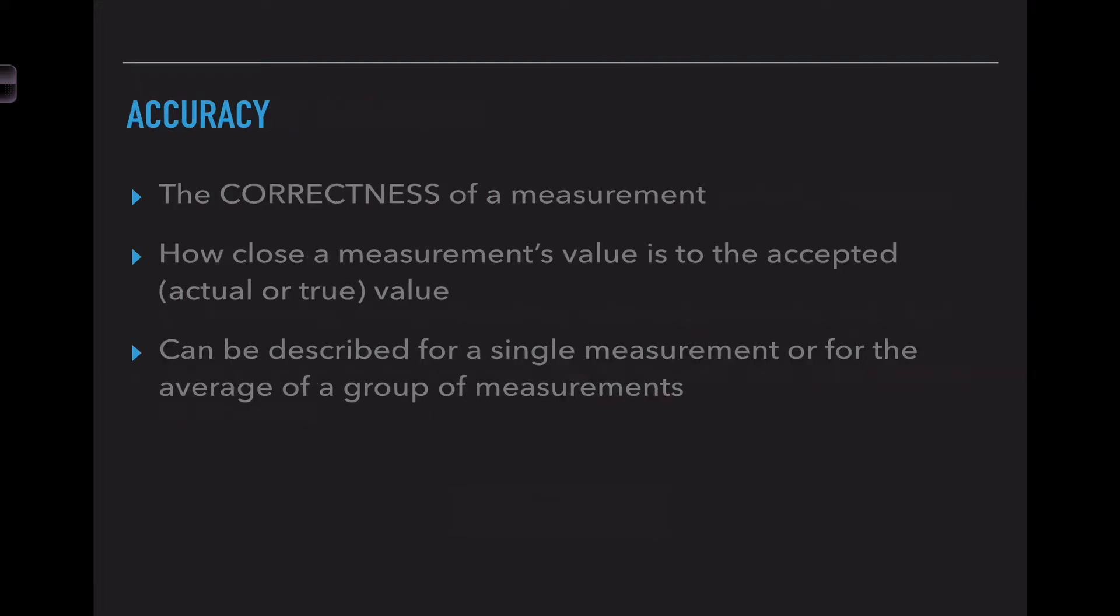So the first thing we're going to talk about is accuracy. Accuracy is the level of correctness of a measurement, meaning how close is a measurement's value to the actual accepted value of the substance. When we do a lab and we attempt to determine the density of something, if you are accurate in your density value, you are going to be close to the accepted answer. This can be described using both a single measurement or you can look at an average of measurements. Accuracy is the correctness of a measurement - how close to the true value are you?